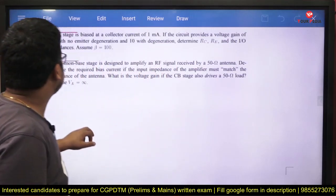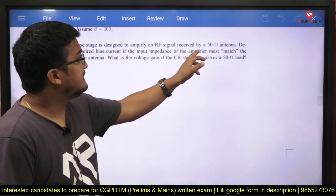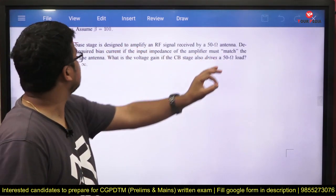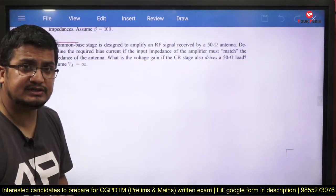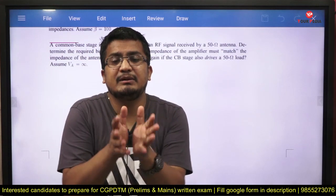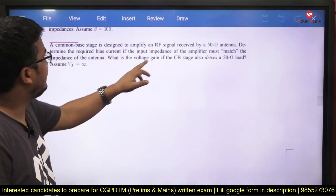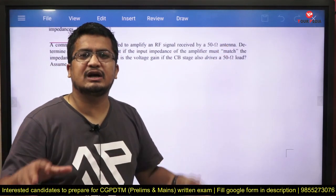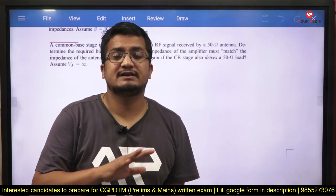Next question: a common base stage is designed to amplify an RF signal received by a 50-ohm antenna. Determine the required bias current if the input impedance of the amplifier must match the antenna impedance of 50 ohms. Also determine the voltage gain if the common base stage drives a 50-ohm load. The antenna can be modeled as a Thévenin equivalent with the input voltage and 50-ohm source impedance. Convert the common base to its small signal model and simply solve the circuit to get the answer.